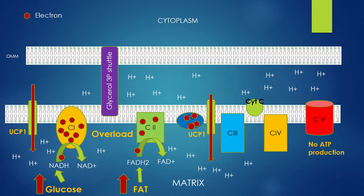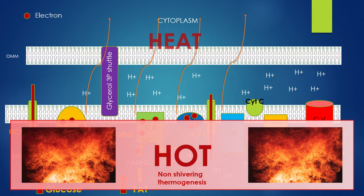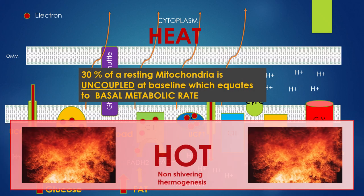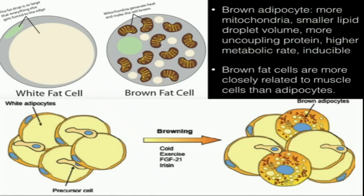As the protons leak towards the inside, it produces heat — they say it's 50 degrees Celsius inside during uncoupling. About 30% of resting mitochondria is uncoupled at baseline, which actually explains our basal metabolic rate. Your metabolic rate increases the more mitochondria you have. Heat is produced in the process — that's why we are 37 degrees Celsius. The more mitochondria you produce, your white fat cells turn to brown fat cells. Brown fat cells are brown because of the tinge of the mitochondria.